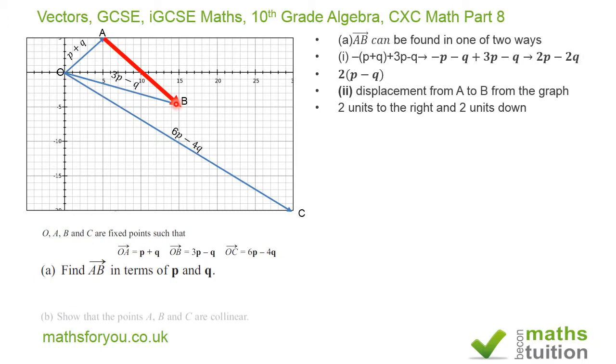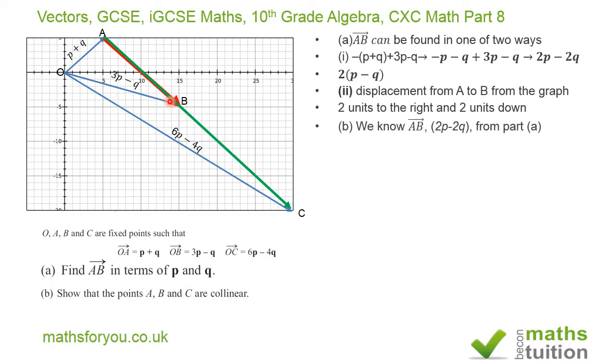Now for part B, it says show that the points A, B, and C are collinear. First, what I've done is to draw the vector AC, which is what I got there. And I have to remind ourselves that vector AB is 2P minus 2Q, or 2(P minus Q).